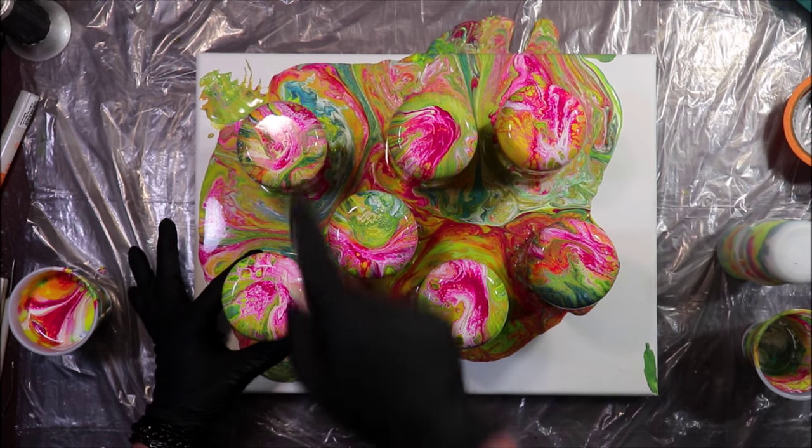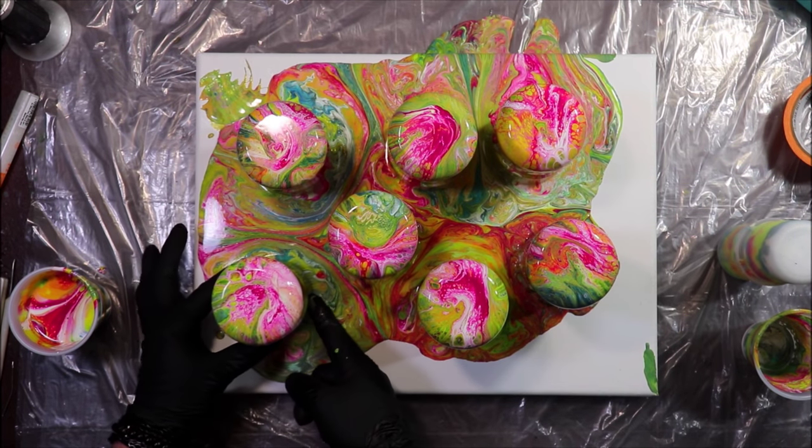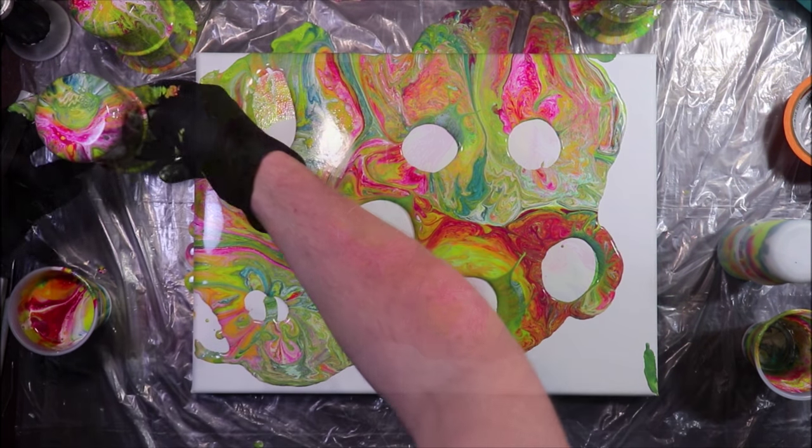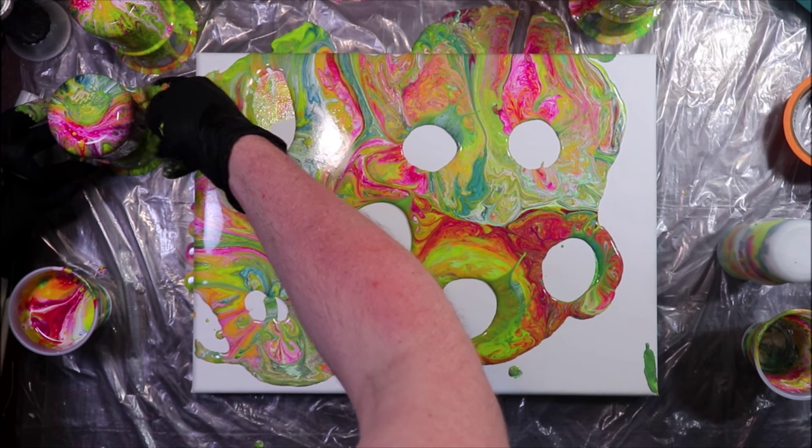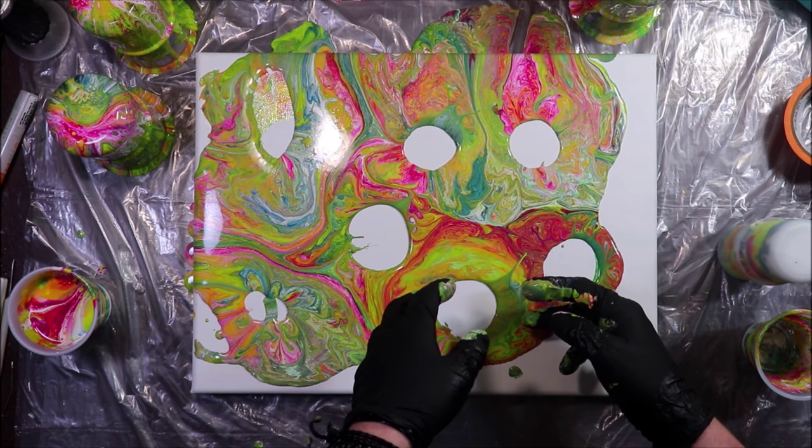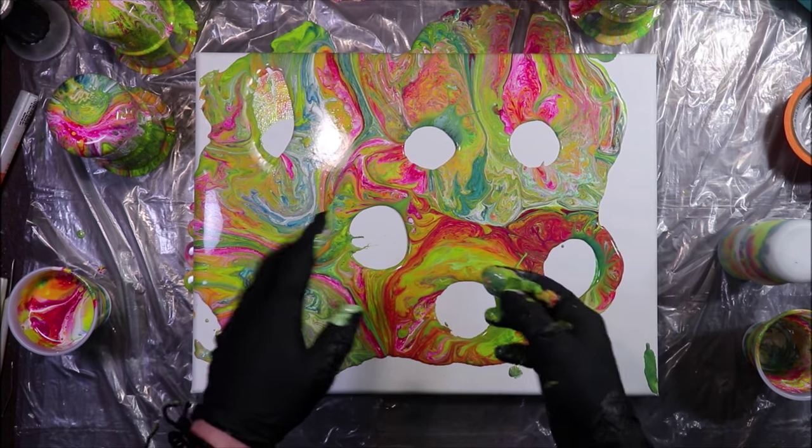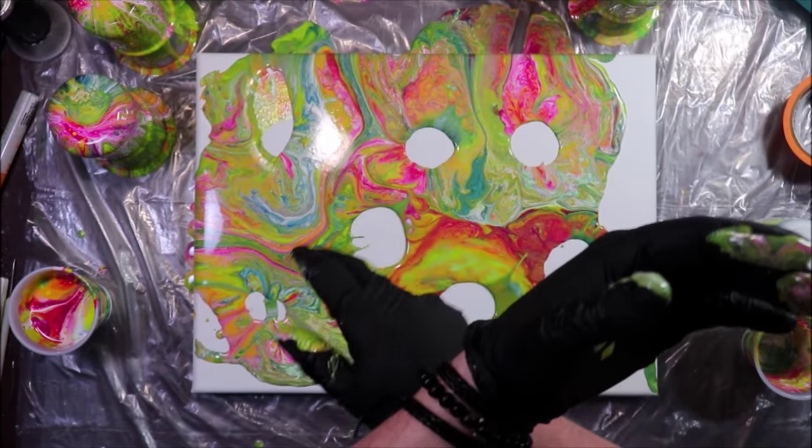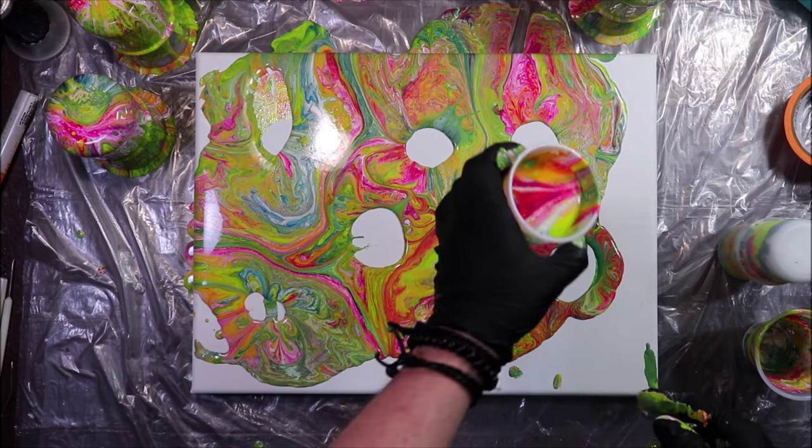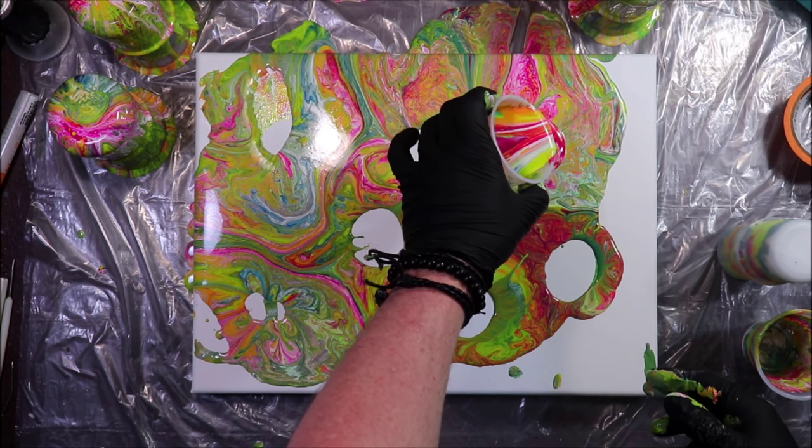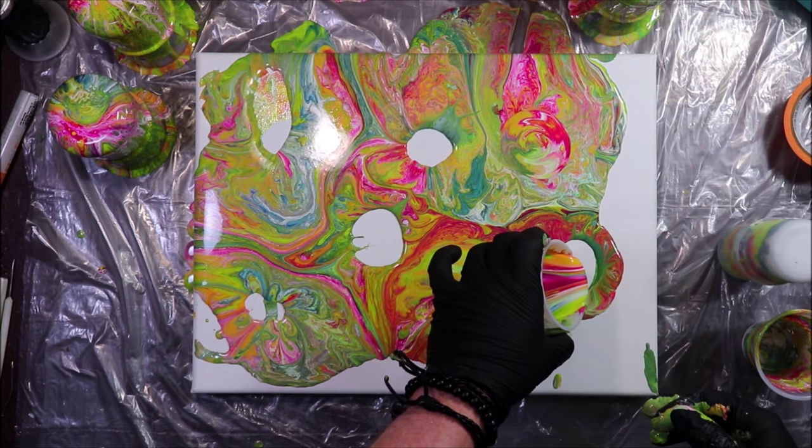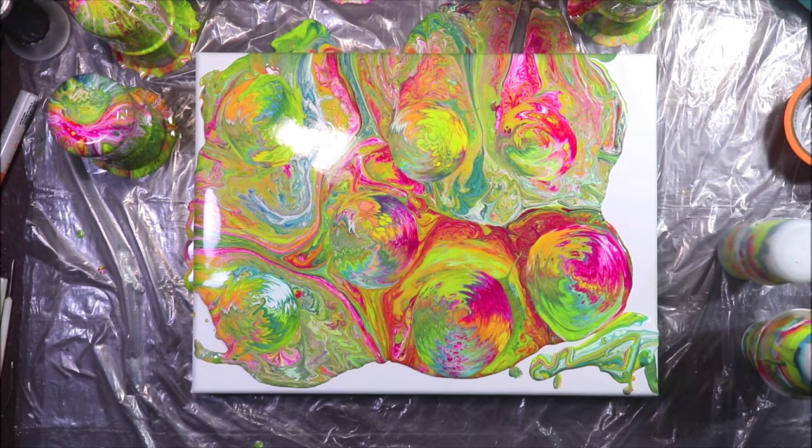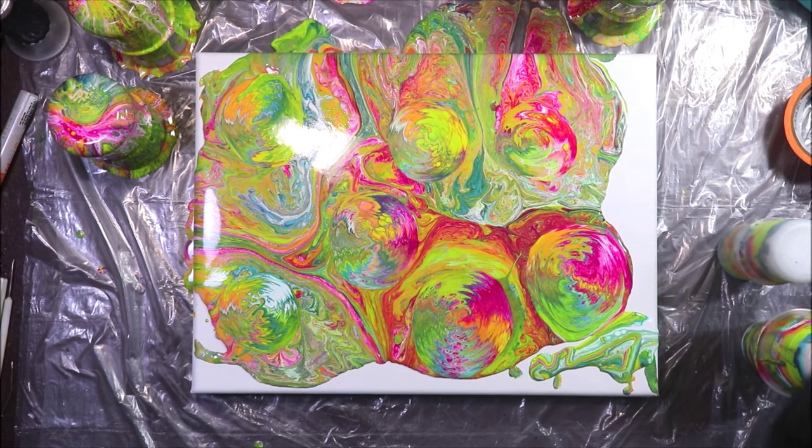I'm going to move these cups off over onto the side and we'll show them afterwards. Bright and happy, just the way I wanted them. You can kind of get an idea of what the sides are going to look like just by looking at the canvas. I'm just going to fill in some of these spots real quick with little tiny ring pours. I'll be right back.